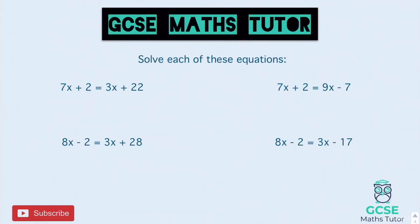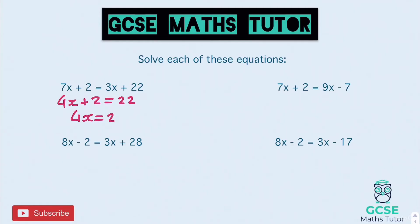So for the first one, taking away 3x from both sides, we get 4x plus 2 equals 22. Take away the 2 from both sides, we get 4x equals 20, and then divided by 4, x equals 5.